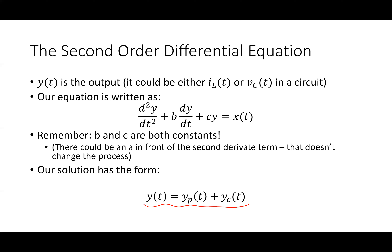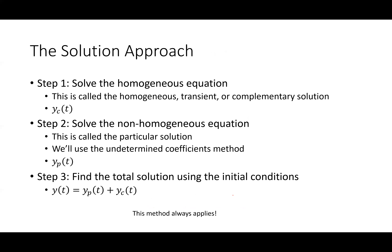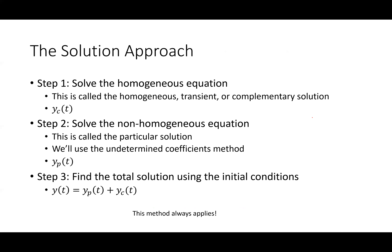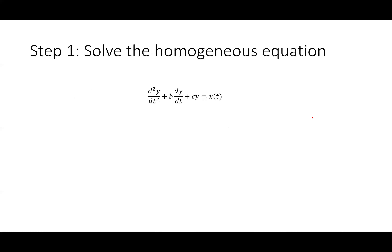The solution always has this form: a particular solution plus a transient solution, added together. The process is fairly simple — you solve the homogeneous equation to get the transient response, then get the particular solution using undetermined coefficients (make a guess and solve for unknown values), then combine them both together.